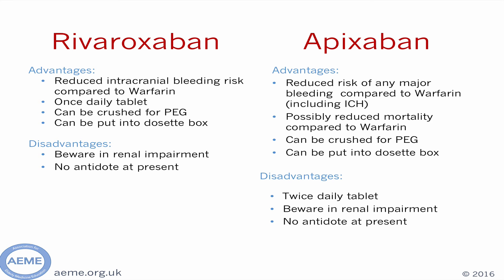Apixaban is a NOAC taken twice daily at a dose of either 5mg or 2.5mg, depending on renal function and age. Apixaban carries a slightly reduced risk of major bleeding compared to warfarin, and also a slightly lower risk of stroke in the context of atrial fibrillation. As with rivaroxaban, it can be crushed for PEG-fed patients and put into a dose set box. Disadvantages include being a twice daily tablet, the need to monitor renal function once or twice a year, and no antidote in the context of major bleeding.